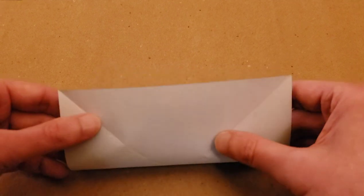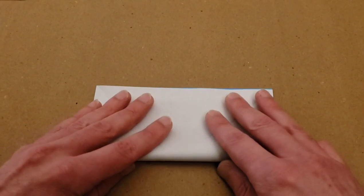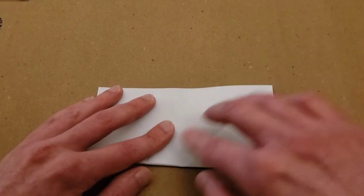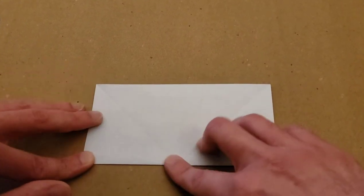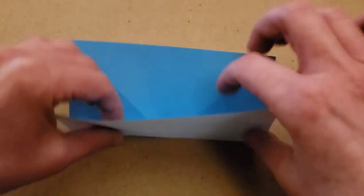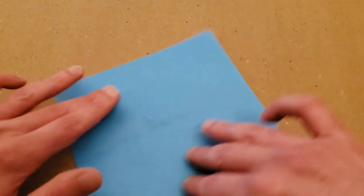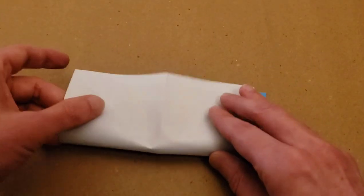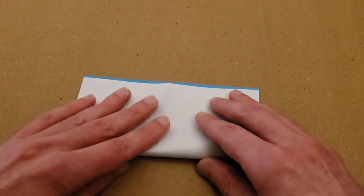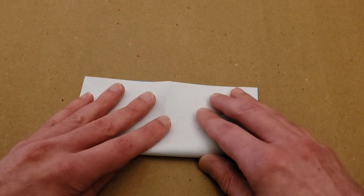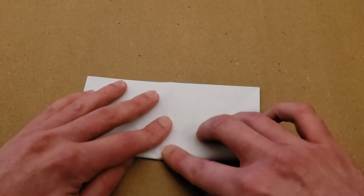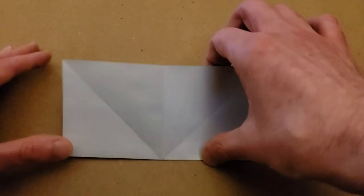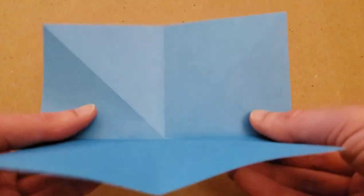So fold it in half to make a rectangle. Open it up, turn, and do it again. Another rectangle. There we go. And we're almost done with our base.